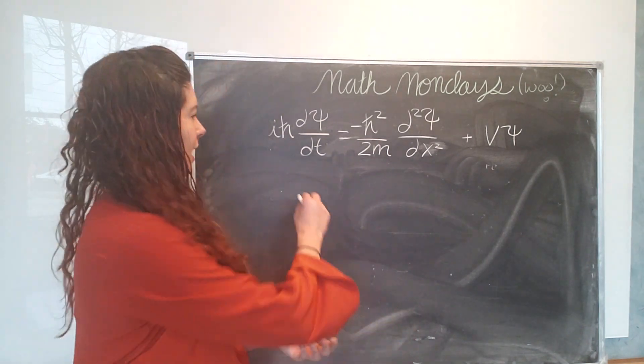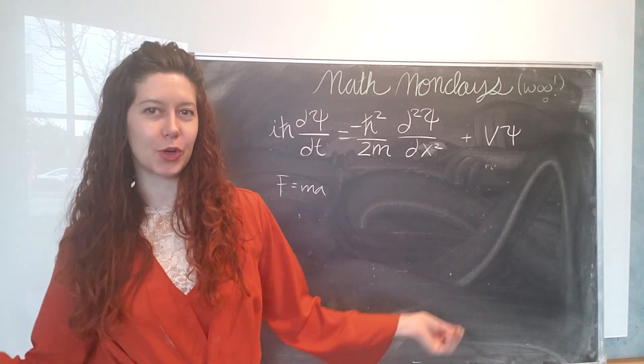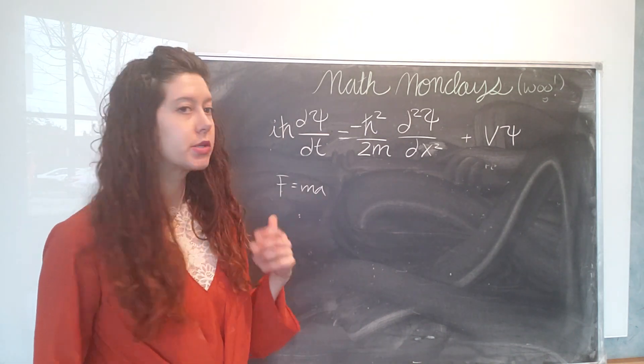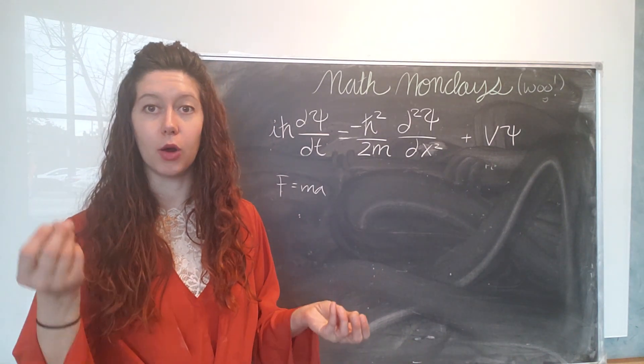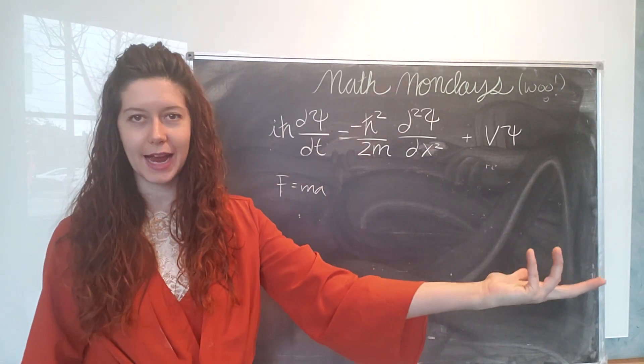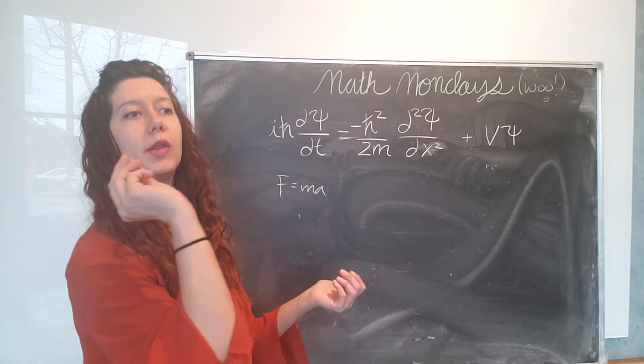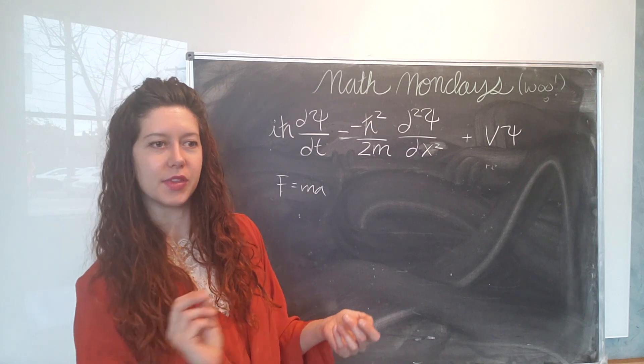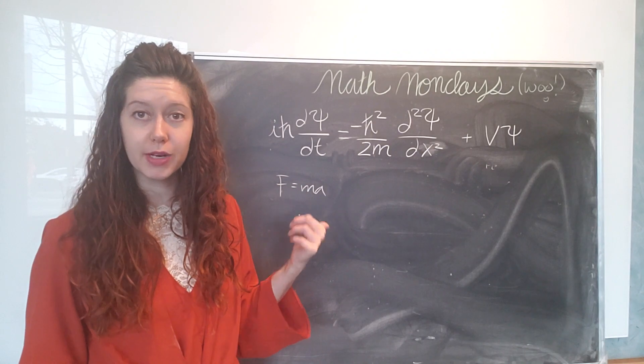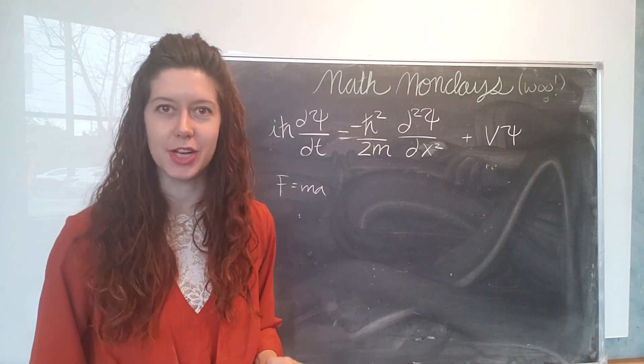We would use Newton's equation f equals ma if we wanted to really sit down and figure out how we could turn this funny demonstration into an actual party trick. So what we would do is we would input some information about the cashew and about where I'm throwing it into this equation and then we could solve for where the cashew is going to land given different starting points. We can use Newton's equation f equals ma to solve and very accurately predict where the cashew will end up.